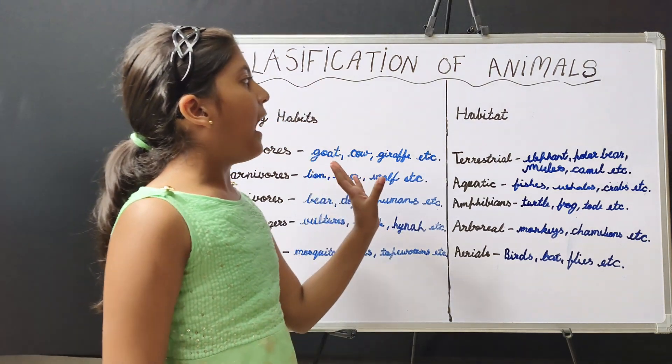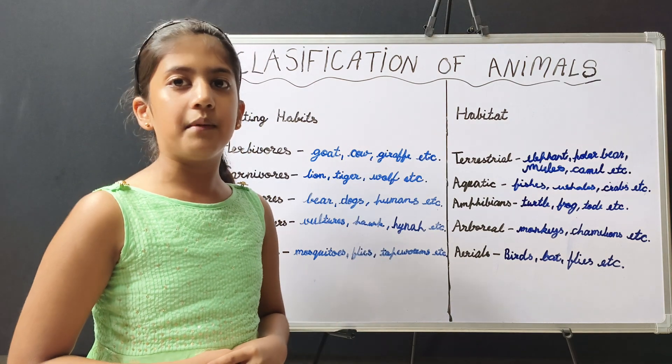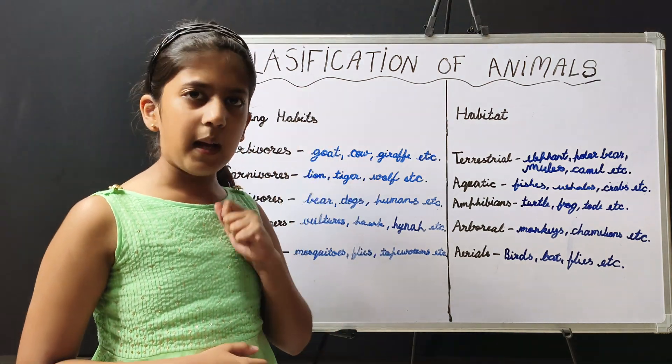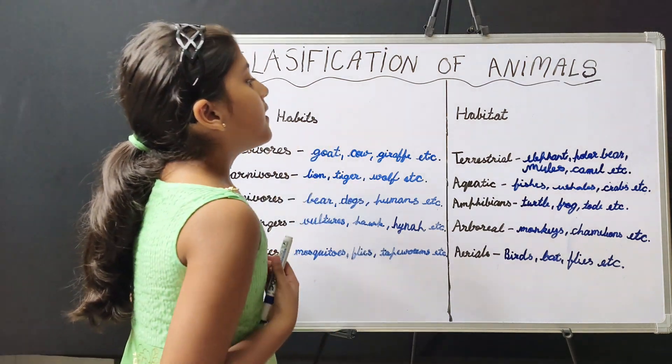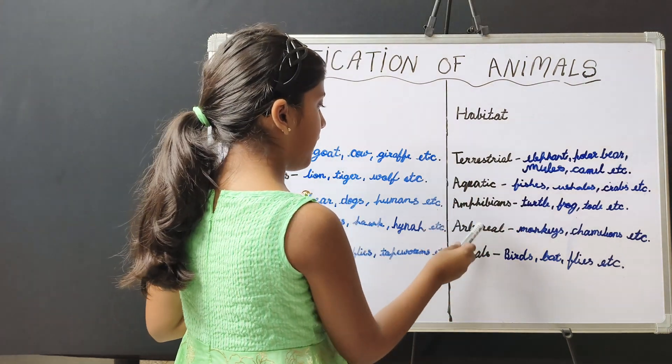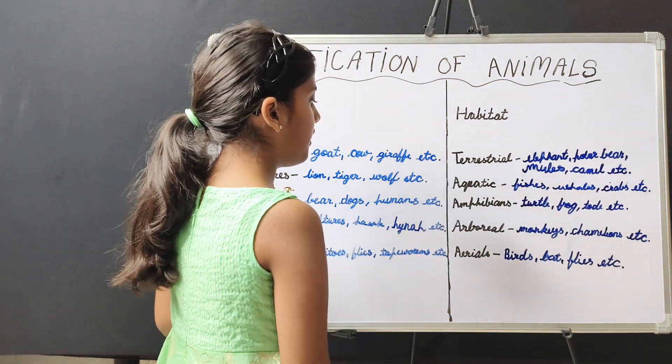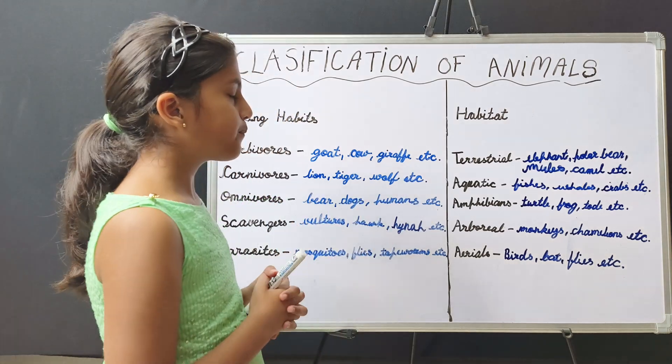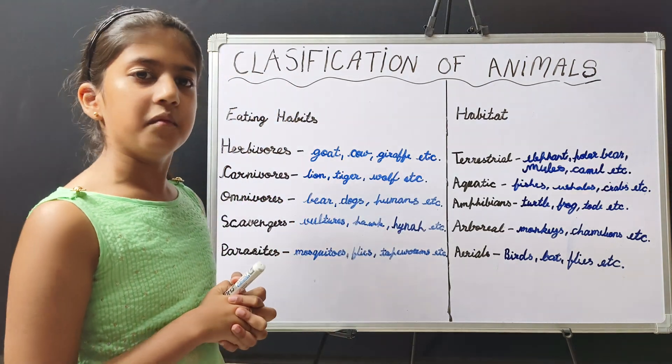According to their habitat, there are five types of animals: terrestrial, aquatic, amphibians, arboreal, and aerial. Let me explain them one by one.